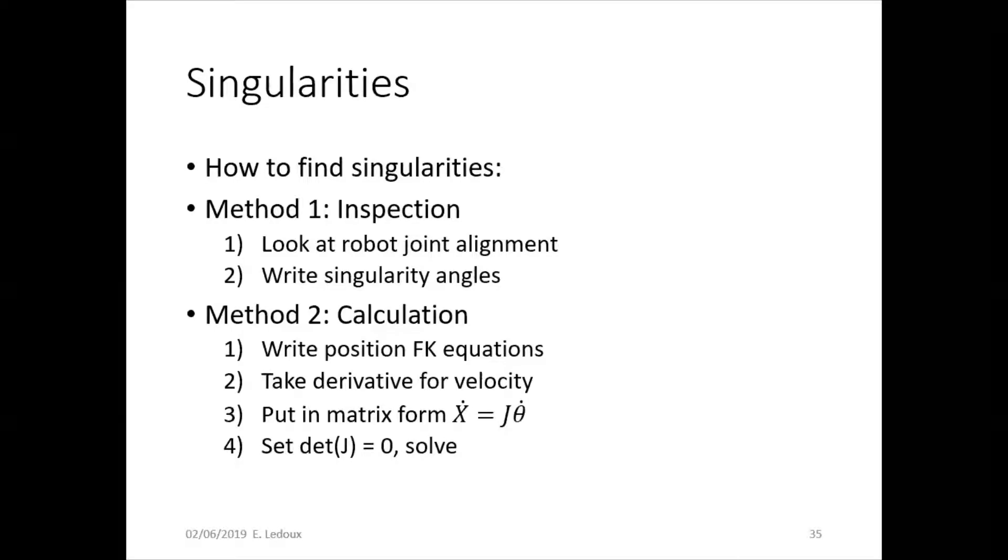There are two methods to find singularities. Method one is inspection. That's basically look at the robot, write down the answer. You can just kind of observe and visualize what would be a singularity for that robot. Method two is calculation. You write the forward kinematics equations, take the derivative for velocity, find the Jacobian, set its determinant equal to zero, and solve for the joint positions that would make it equal to zero. And that's where the singularities are.